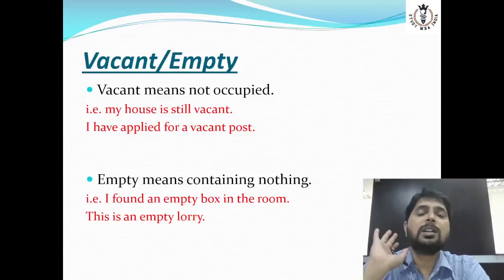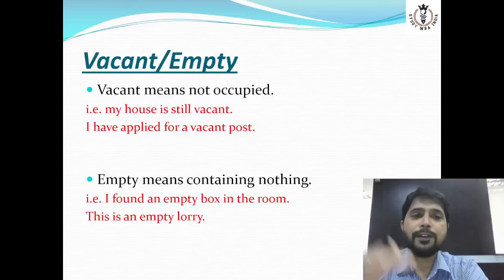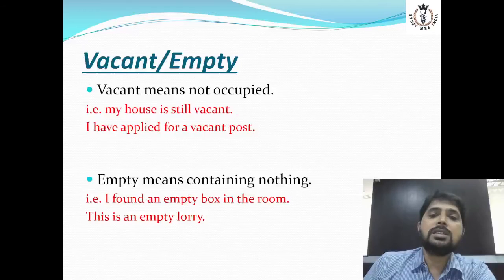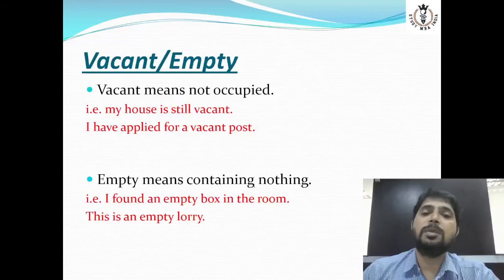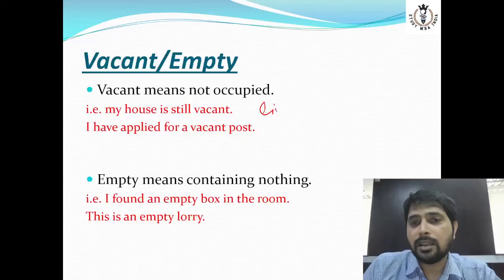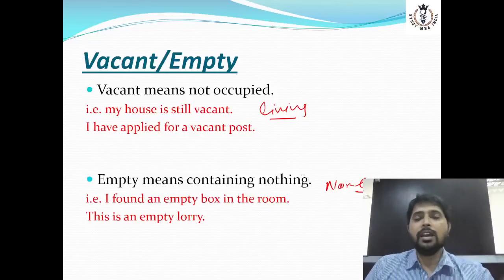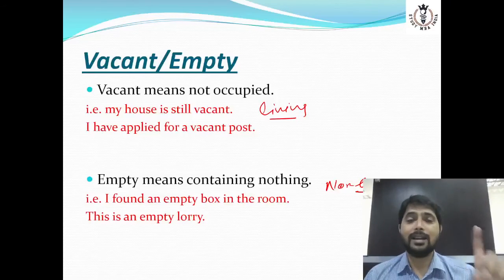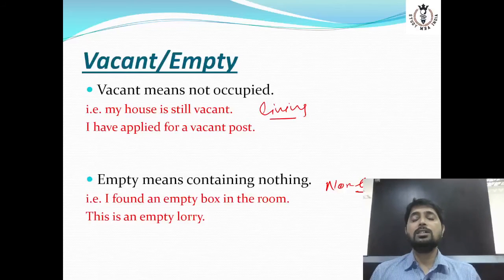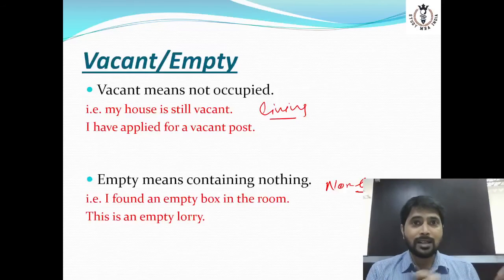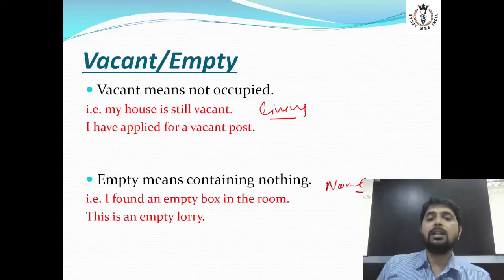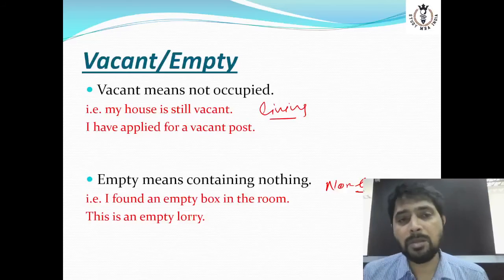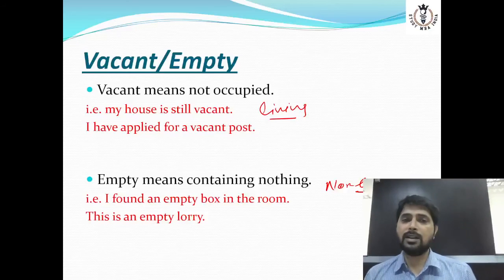Next words: vacant and empty — dono ka matlab khali. Vacant means not occupied, and empty means containing nothing. Jahaan par living ki baat aati hai — that is called vacant. Jahaan par non-living ki baat aati hai — that is called empty. For example, glass paani se khali hai toh 'empty glass.' Agar koi ghar hai jisme insaan rahata tha — that house is vacant. Koi post khali hai jis par insaan kaam karta tha — that is a vacant post.